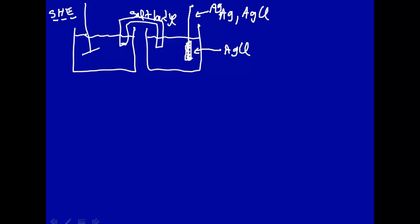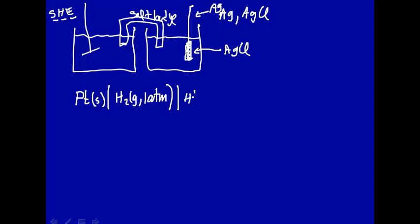Let's write the half reactions. You don't always have to draw the full diagram — you can use shorthand notation: platinum solid, then a phase boundary, H₂ gas at one atmosphere — that's the standard hydrogen electrode. We need to put some electrolyte in here, so let's use HCl, which dissolves in water to H⁺ and Cl⁻. Then on the other side, we have silver chloride and silver solid. That's the shorthand way of writing this cell.